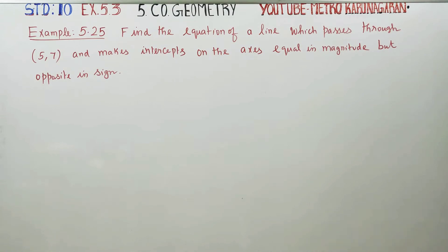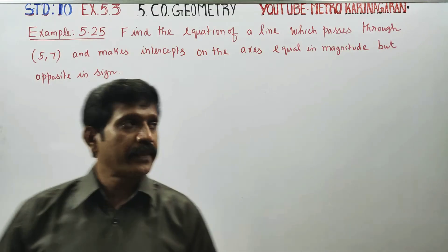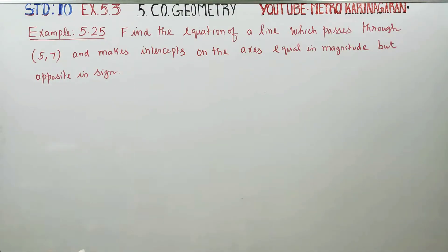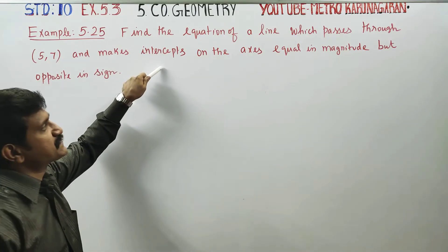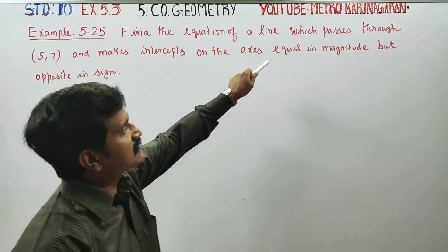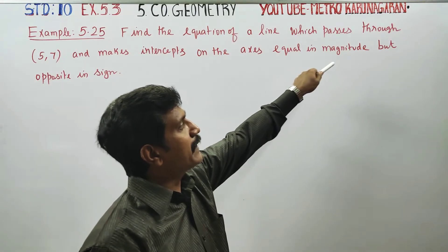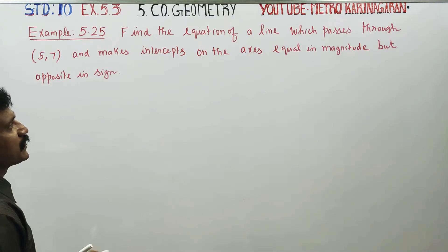Hello, Standard Ten students. I am Metro Karanagaran. In Example 5.25, find the equation of the line which passes through (5, 7) and makes intercepts on the x-axis equal in magnitude but opposite in sign.